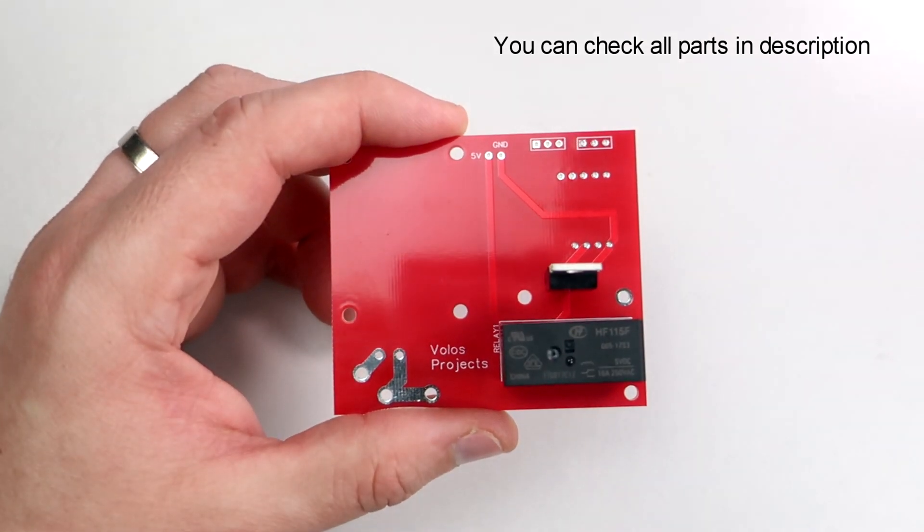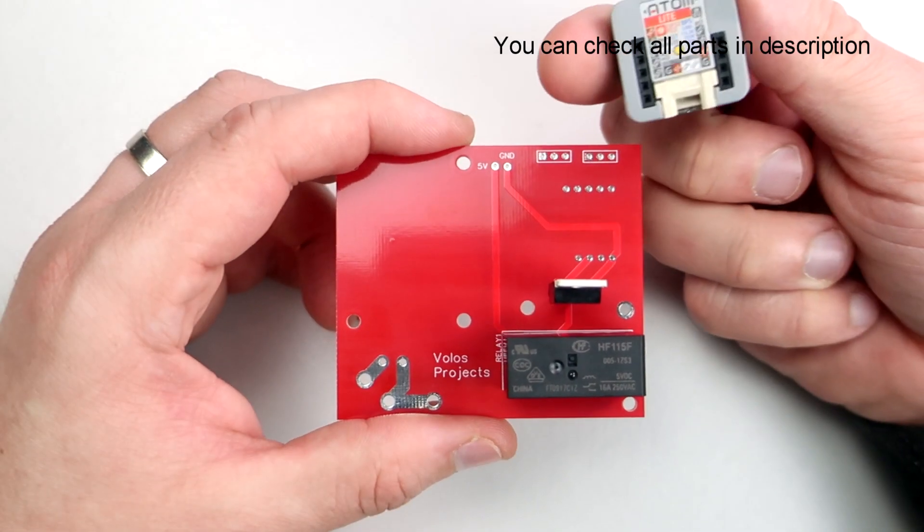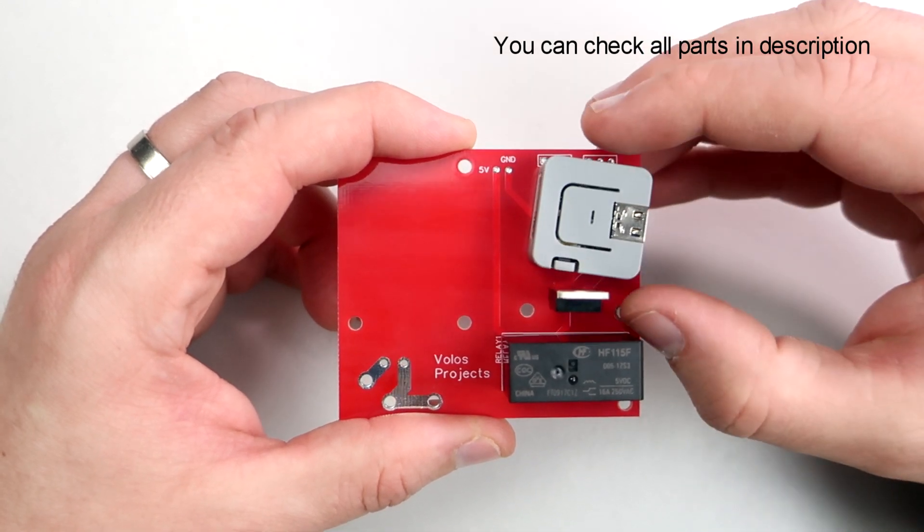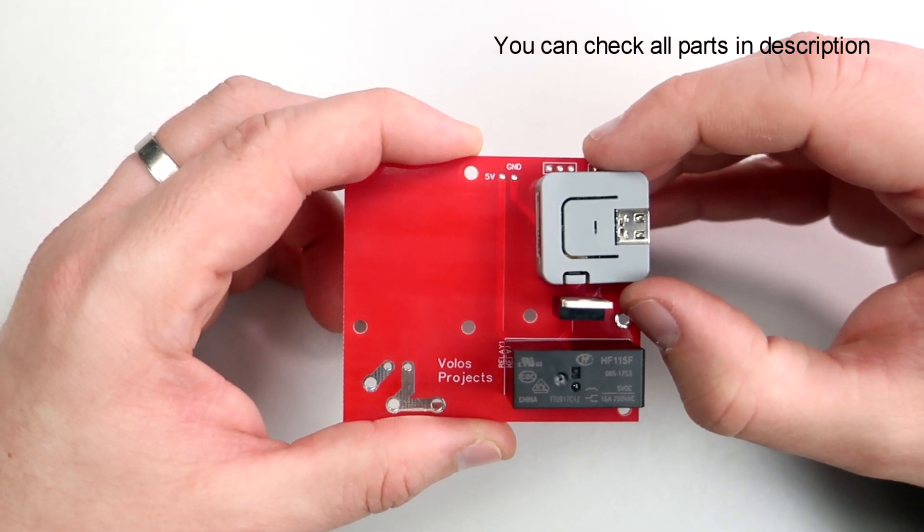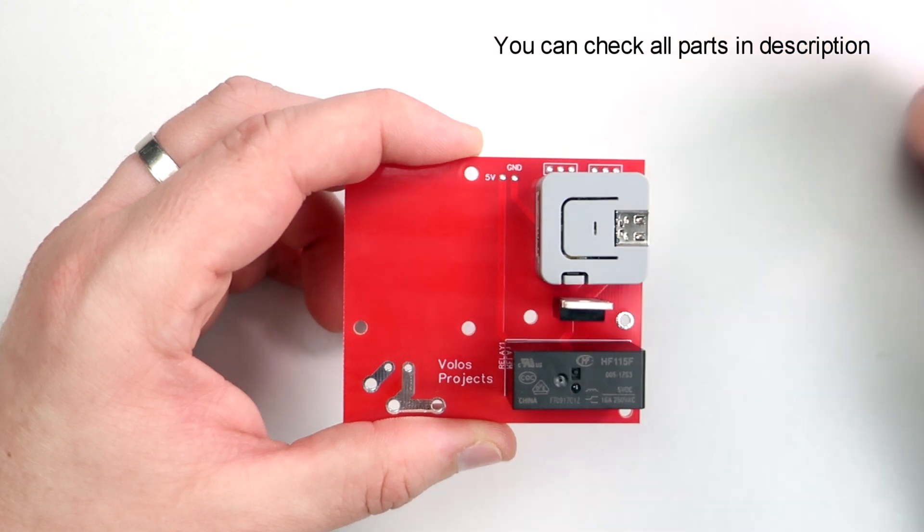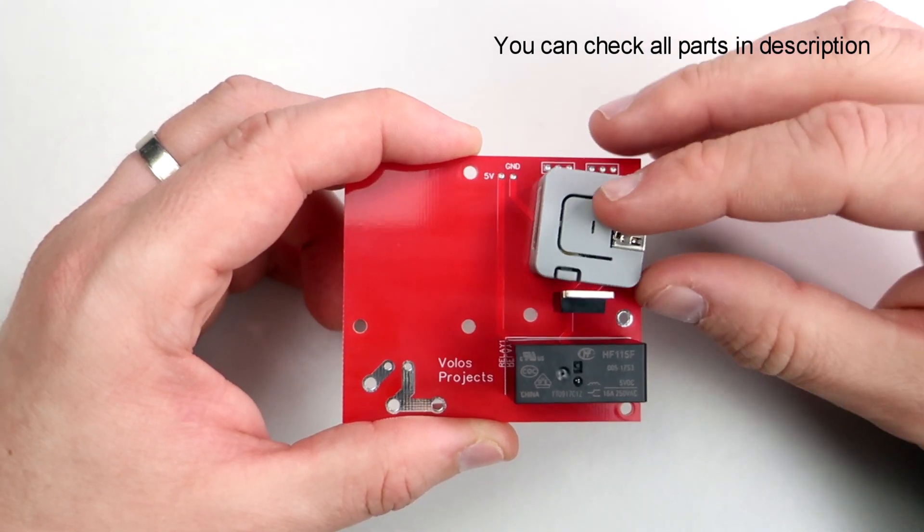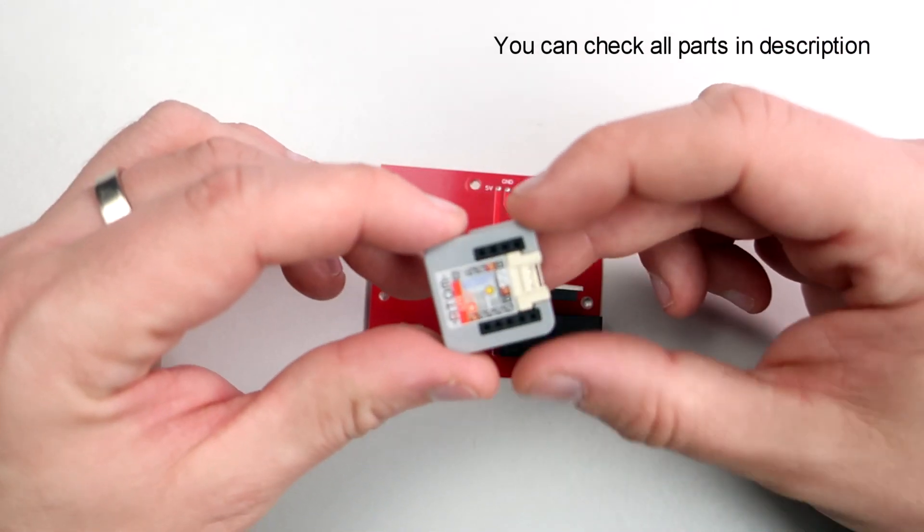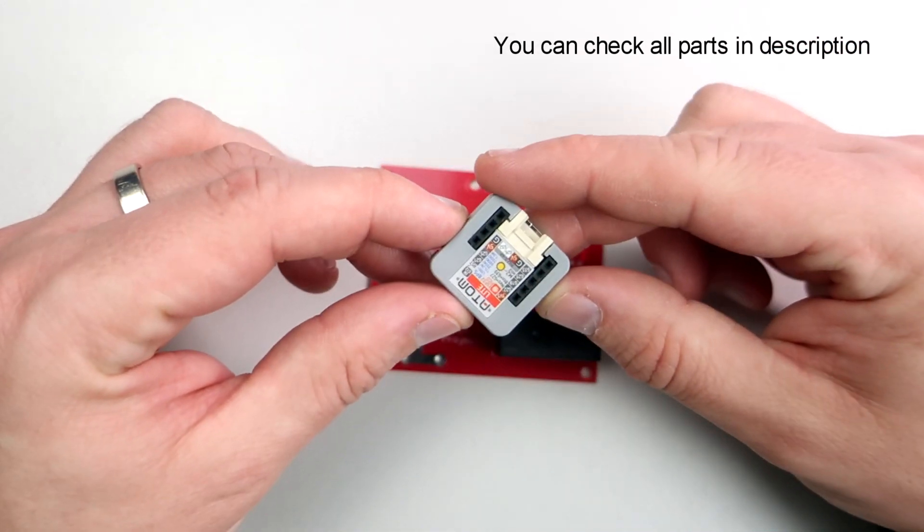And the brain of this project is this M5 Atom development board, the smallest ESP32 development board I could find. I will talk more about this board later, so stay tuned.